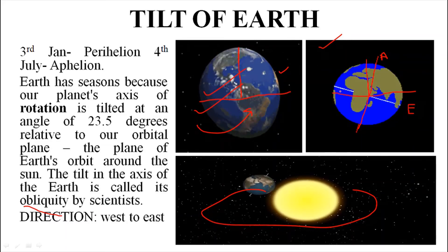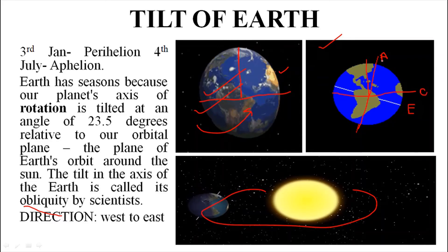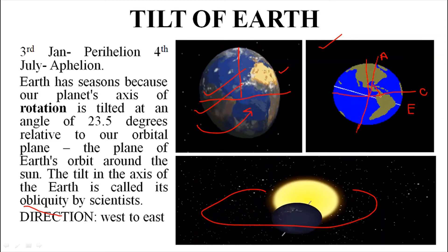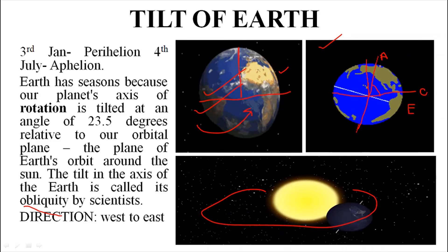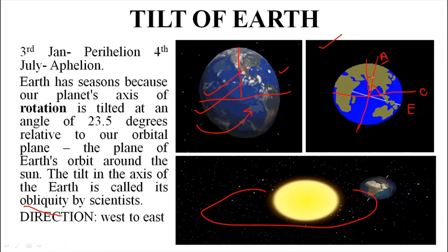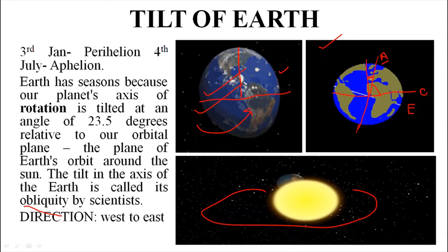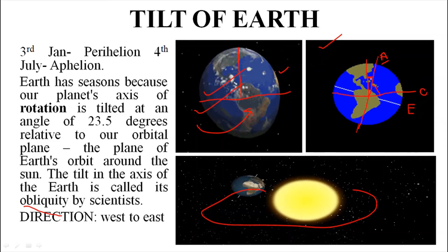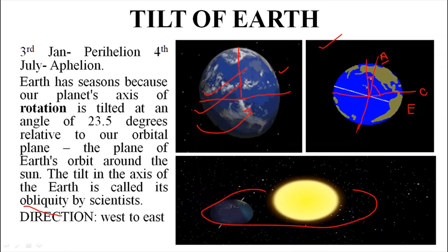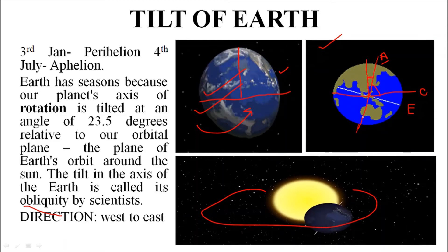The inclination of Earth's tilt is 66.5 degrees with Earth's orbital plane. The angle of Earth's axis with the orbital plane is 66.5 degrees, but the angle of Earth's axis with the perpendicular line from the orbital plane is 23.5 degrees. This 23.5 degrees is called the inclination or obliquity, meaning the Earth is tilted 23.5 degrees from the vertical line of the orbital plane.